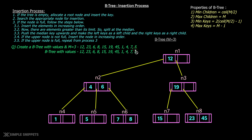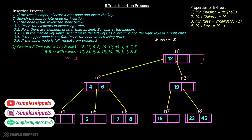So this was the entire insertion process. You can note down these steps and practice with different keys and different M values. You can try with higher values of M — take M as 4, so we'll have 3 keys per node, and insert more values for good practice and understanding of the B-tree insertion process. That's it for this video. I hope you understood the entire insertion process of B-tree. If you liked this video, please give it a thumbs up, let me know in the comments, share it with your friends, and I'll see you in the next one. Peace!